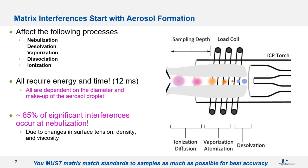Matrix interferences in ICP-MS affect the plasma processes of nebulization, desolvation, vaporization, dissociation, and ionization. All of these processes require energy and time. Studies have shown it takes a droplet about 12 milliseconds to travel through the plasma, so anything affecting the rate or completeness of these processes can cause a matrix interference. Most, about 85 percent, of significant interferences occur during nebulization due to changes in sample viscosity, surface tension, and density. This is why you should matrix match as closely as possible for the best accuracy.